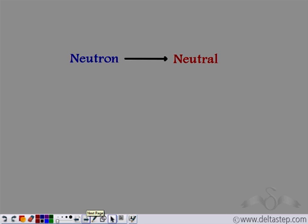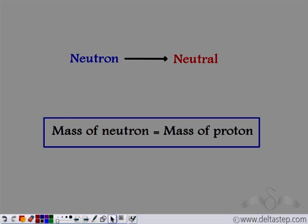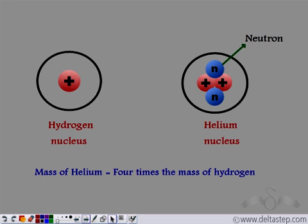So he concluded that the neutron is neutral in nature — it has no charge on it. Later, through further experiments, it was shown that the mass of the neutron is equal to the mass of the proton. Hence, the mystery of the helium nucleus was now solved. Helium nucleus has four times the mass of hydrogen nucleus, and therefore it has two extra neutrons.